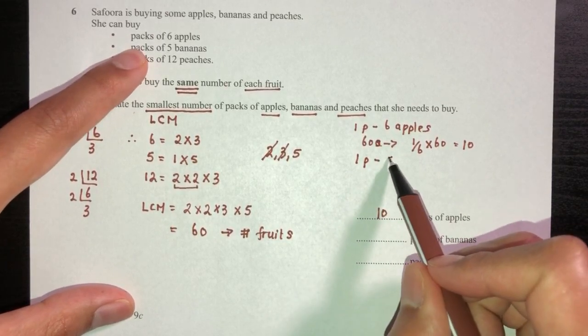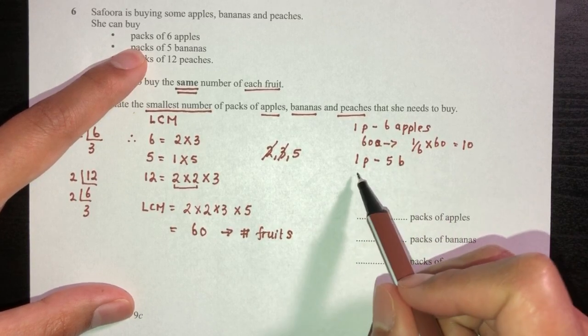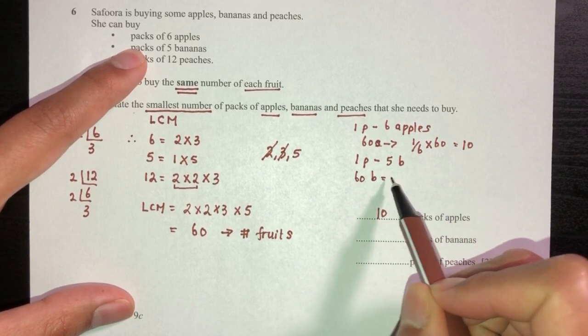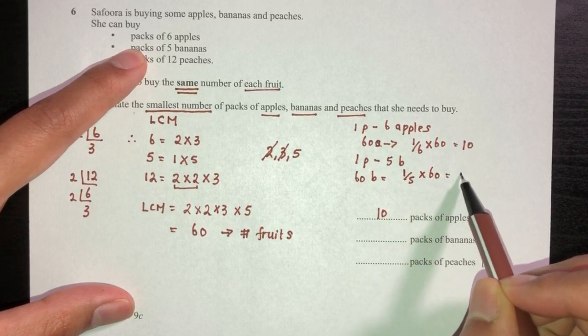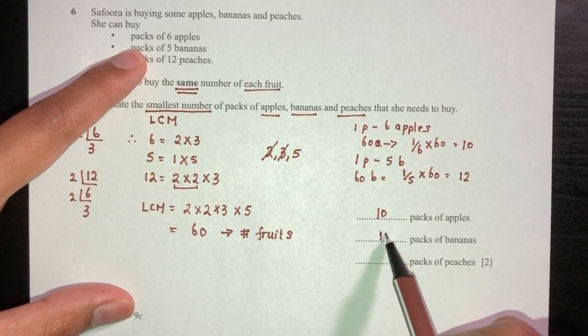Now same steps. We know that one pack of banana has five bananas, so now sixty bananas, that will be one divided by five times sixty, that will be twelve. Twelve packs of bananas.